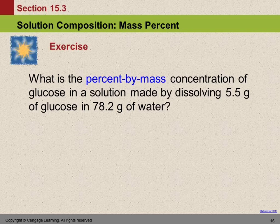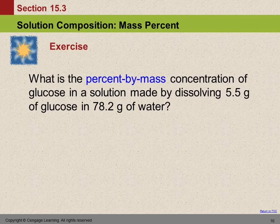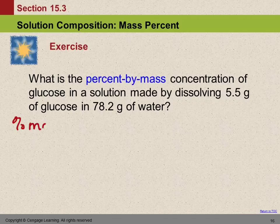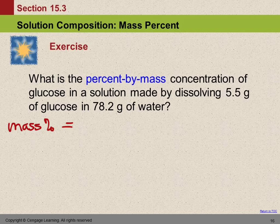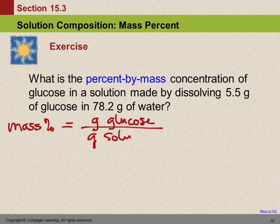So we want percent by mass. Actually, it's usually called mass percent. What's our solute in this solution? 5.5 grams of glucose. So the mass percent of glucose is going to be the grams of glucose divided by the grams of solution—the whole thing—times 100.